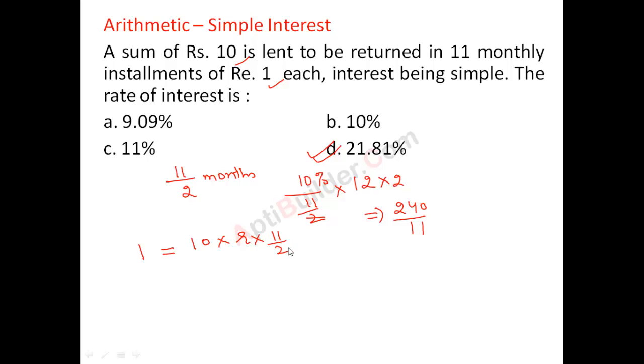So if it is per annum I need to calculate, so 11 by 2 months out of 12, so I have converted it to years. So PRT by 100, so R in this case will be...